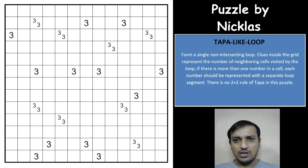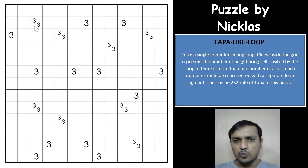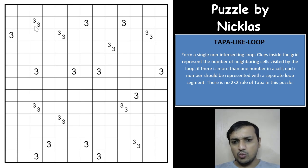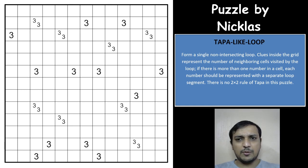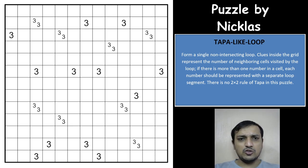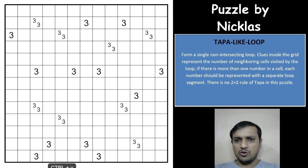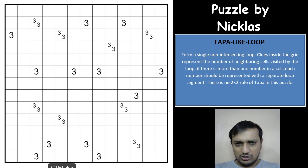Now coming back to this puzzle — Tapa-Like Loop Puzzle. In this puzzle we have to draw a single non-intersecting loop that passes through some of the white cells in the grid, not the numbered cells. You cannot pass the loop through numbered cells. The clues inside the grid represent the number of neighboring cells visited by the loop. And there is no 2×2 rule of Tapa in this puzzle.